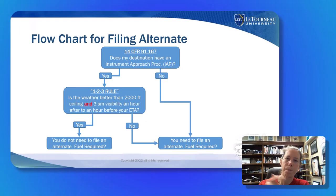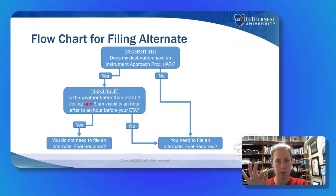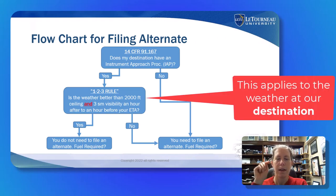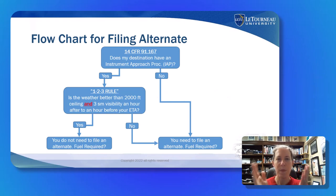This translates into a little game. An important point: we are applying the 1-2-3 rule at the destination when deciding if we need an alternate. We're asking, at the destination, do these criteria get met within the hour before and hour after window? That's where the 1-2-3 rule applies.